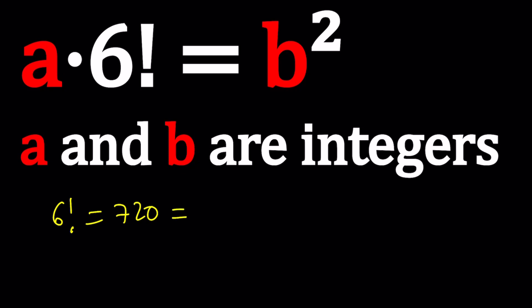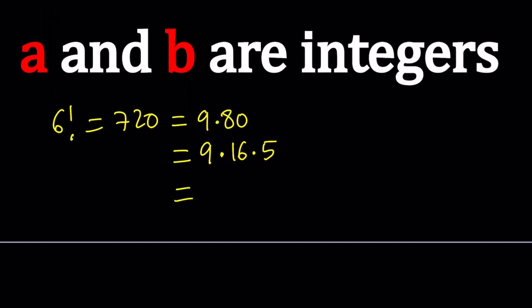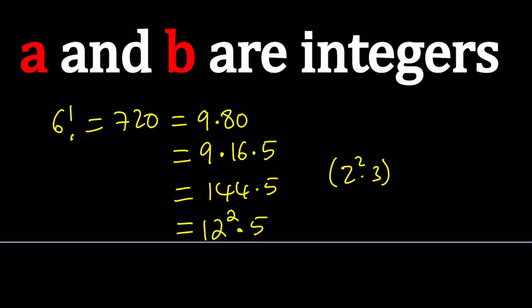For 720, I want to take out all the perfect squares from it. So 9 is obviously a perfect square, and then 9 times 80, and 80 can be broken down into 16 and 5, which is basically the largest perfect square that 80 contains. So 6 factorial is basically 144 times 5, or I can write it as 12 squared times 5. This is not prime factorization, obviously — if you were doing the prime factorization for 6 factorial, then you would write something like 2 squared times 3 to the second power, which is 12 squared times 5, giving you 2 to the 4th, 3 to the 2nd, and 5 to the 1st. You could handle it that way, but I like to do it this way because we put the squares together.